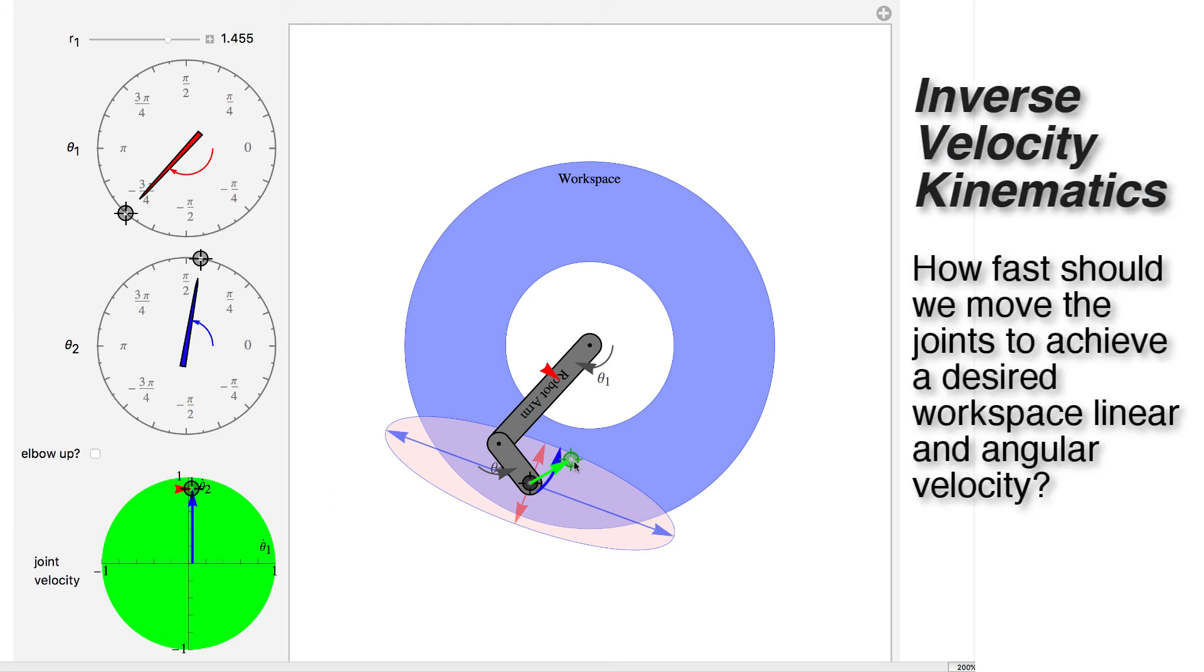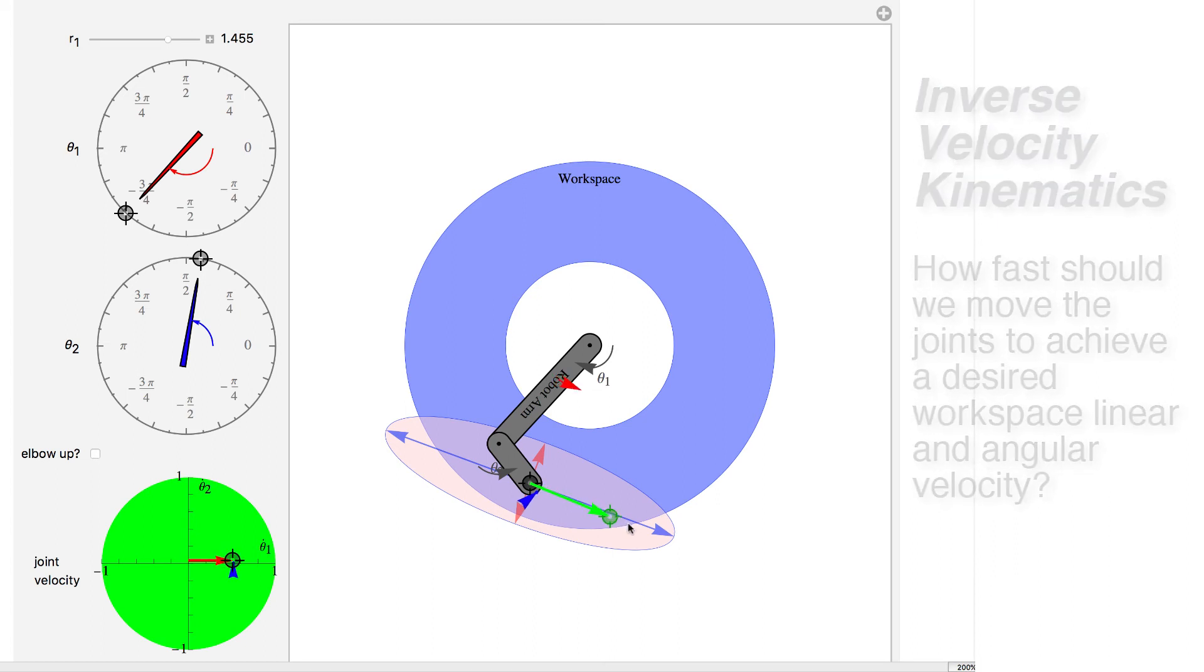This is found by taking the time derivatives of your forward kinematics equations. Now we can also do inverse velocity, where we say, well, I'd really like to move my end effector in this direction. And then we can solve for how we should move those motors in order to do that.